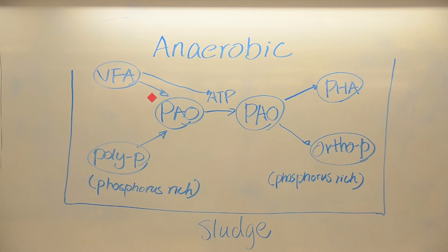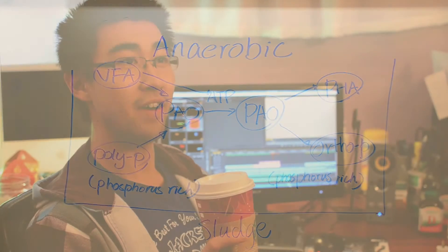In the anaerobic tank, the PAOs uptake polyphosphates and volatile fatty acids. Then, using ATP, they convert them to orthophosphates and polyhydroxyalkanoates. The ATP comes from the decomposition of polyphosphate and nutrients absorbed from the wastewater. Phosphorus is also released from the polyphosphates. Energy and nutrients are stored to prime through the aerobic part of the process. A small amount of acetate is also produced.